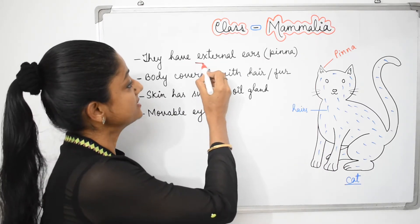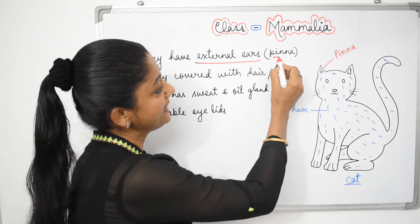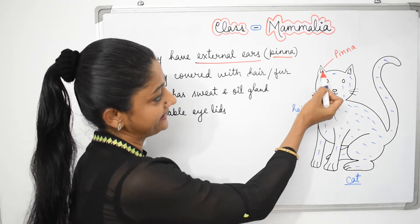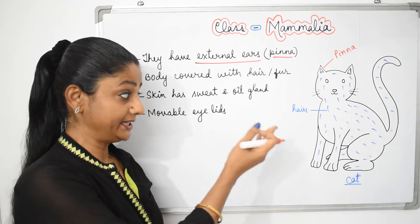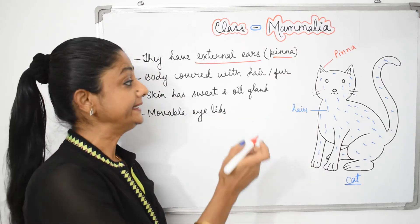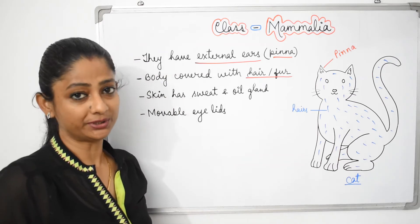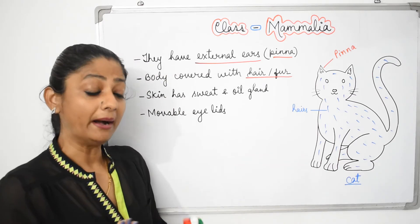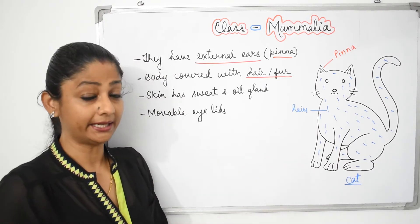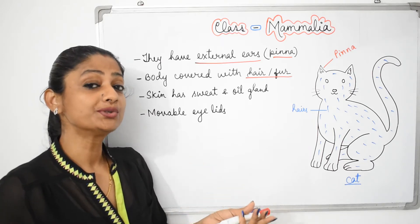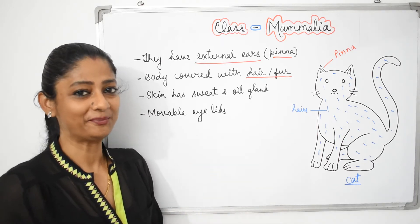Mammals have an external ear, which is called the pinna. Their body is either covered with hair or with fur. We humans have comparatively less hair on our bodies, but other mammals have quite a lot of hair on their bodies.